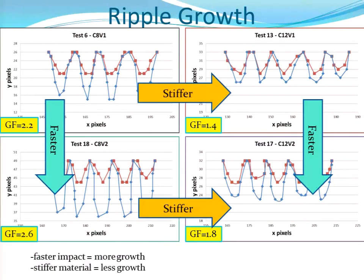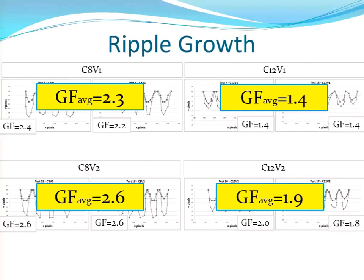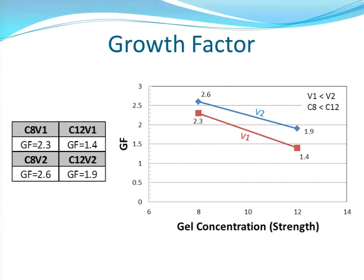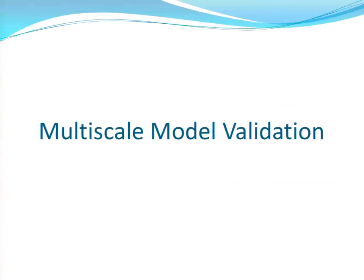As you would expect, when you go from the less stiff gel to the more stiff gel, you see a suppression in the growth factor — and that's exactly what happens for both velocities. When you increase the velocity, you would expect a higher growth factor, and that's exactly what happens in both cases. This shows that as you increase the strength, you decrease the growth factor.